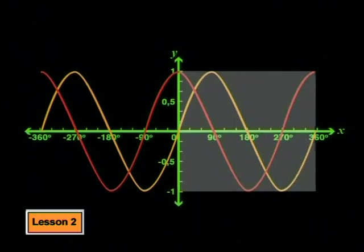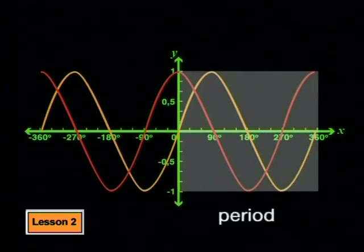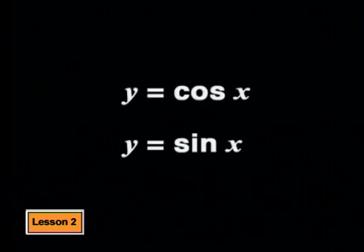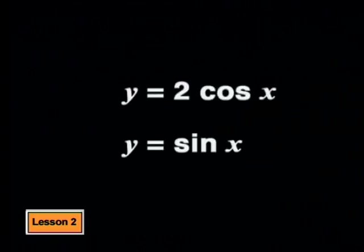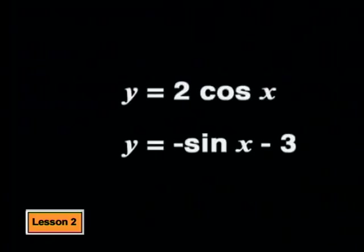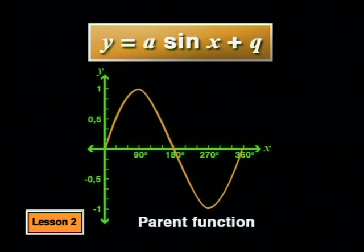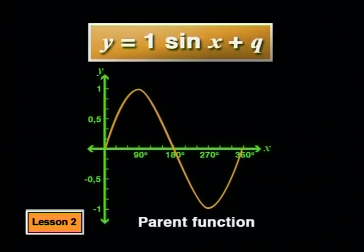So we say that the sine graph and the cosine graph both have a period of 360 degrees. One last important thing about the sine function and the cosine function: we define these functions as y equals cosine x and y equals sine x, but it's possible to have other sine and cosine functions. For example, the function y equals 2 cosine x, or the function y equals negative sine x minus 3. There's a whole family of sine functions and we can represent them with a general formula y equals a sine x plus q. We can consider y equals sine x as the parent function of this family, with an a-value of 1 and a q-value of 0.